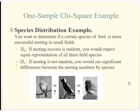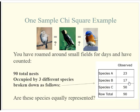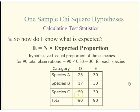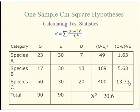My alternative hypothesis is simply that the numbers won't be equal among the three species. The chi-square test statistic is calculating how far off I am from the expected equal distribution. You've been out in the field and found 90 total nests. We'll call them species A, B, and C to avoid bias. From the field data we have our observed counts. Since we assume equal distribution with only three categories, we expect a third of all observations in each — so 30 nests per species.